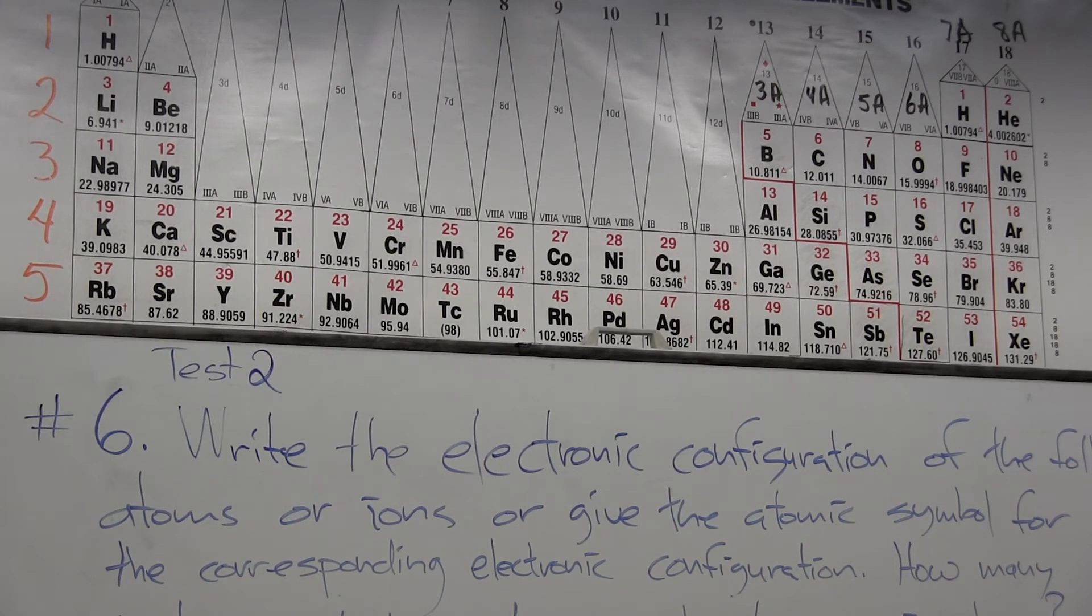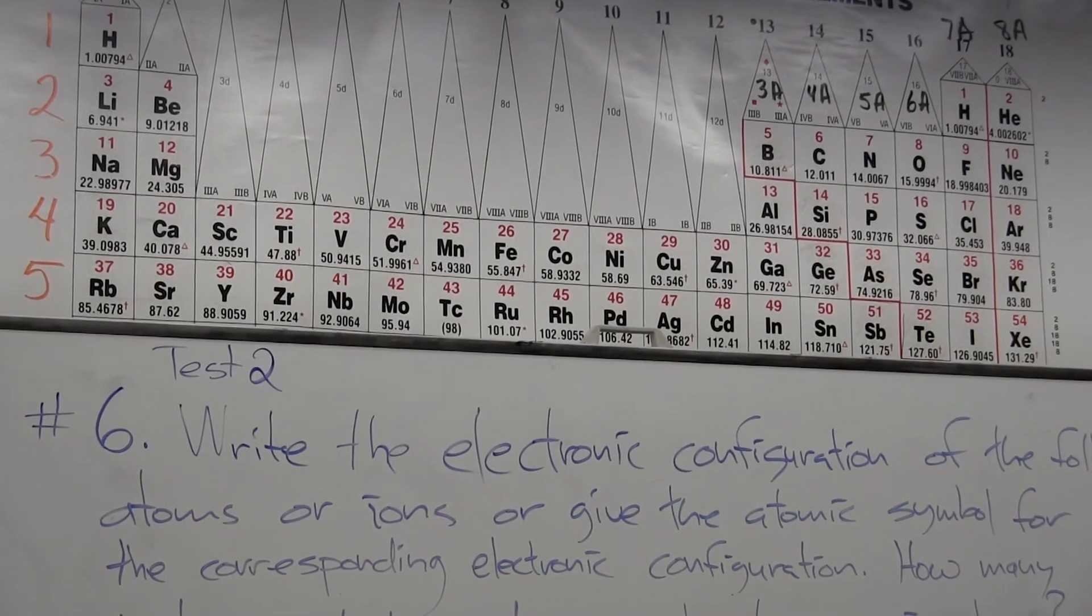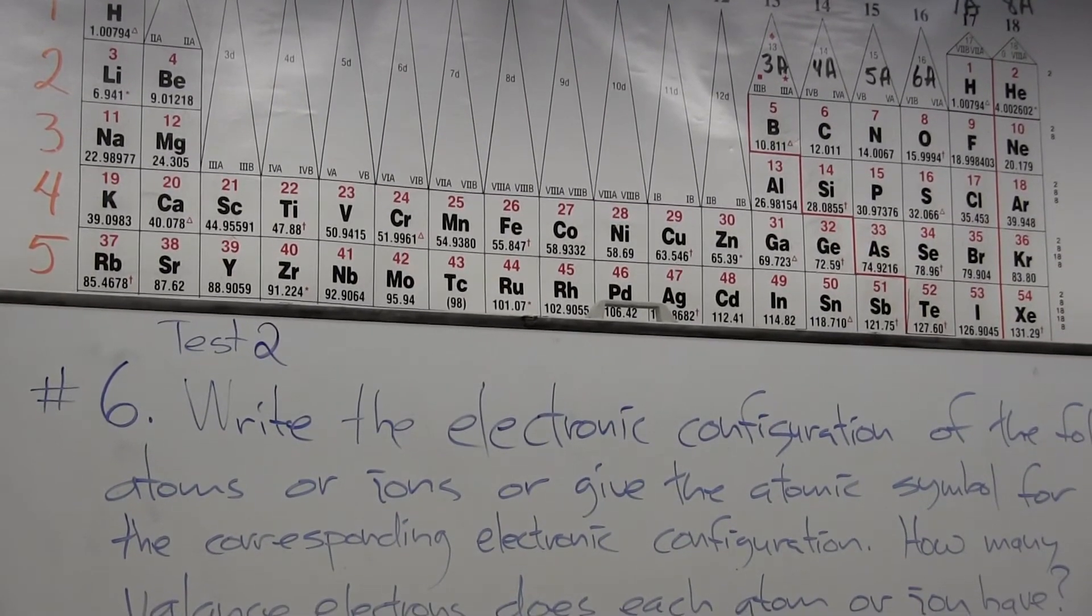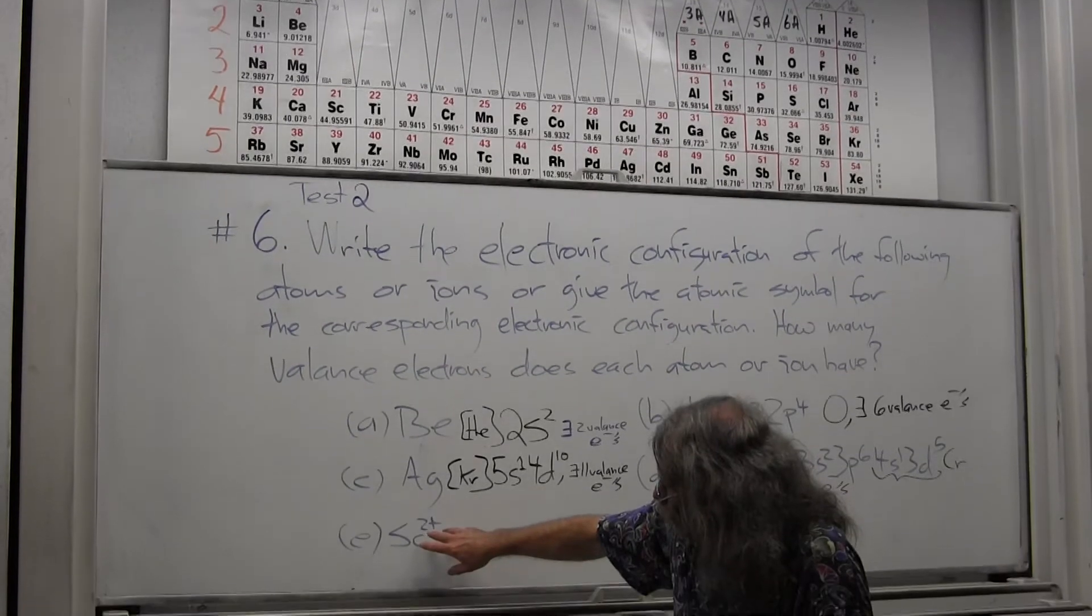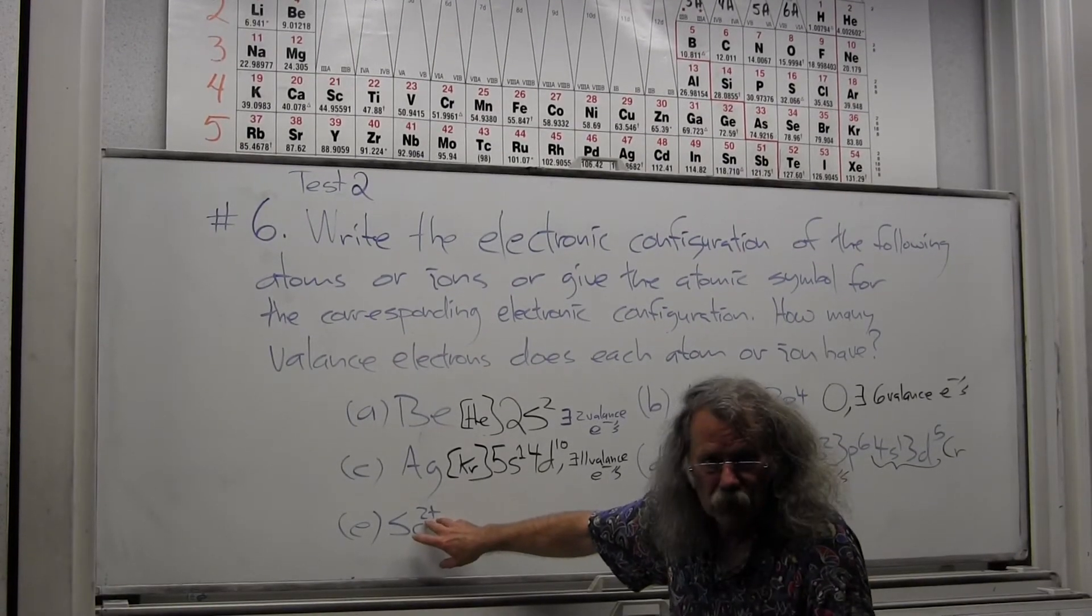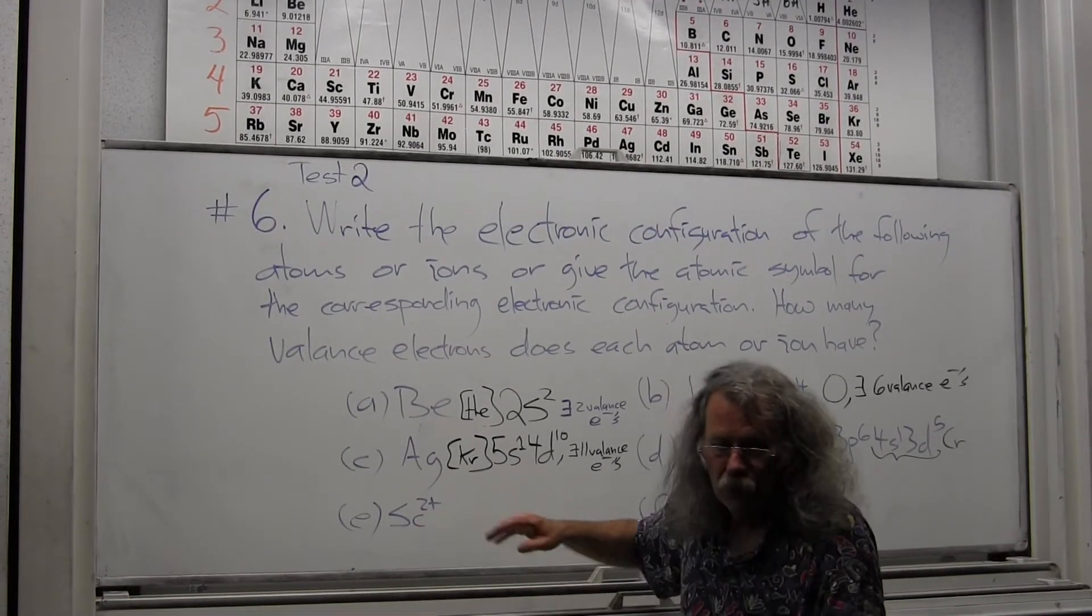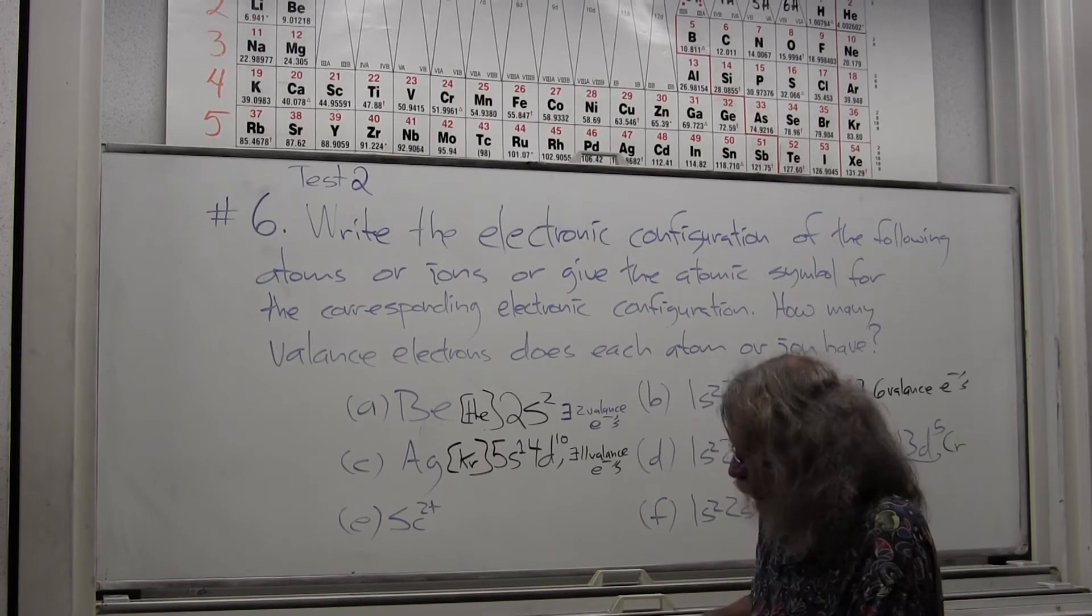So what I'm actually going to have is—if I remove the two s electrons first—I'm going to be left with a d electron in the outer orbital or in the valence.